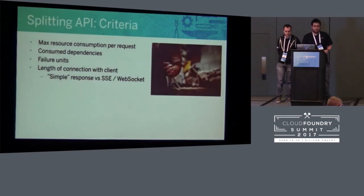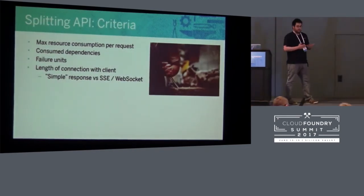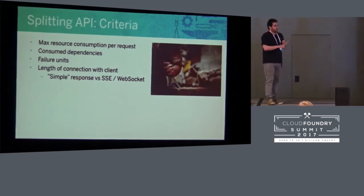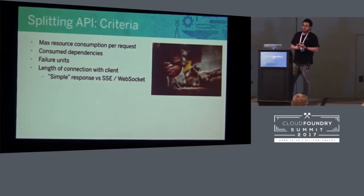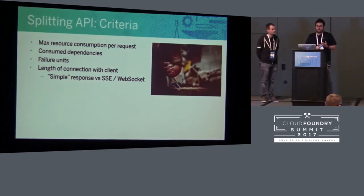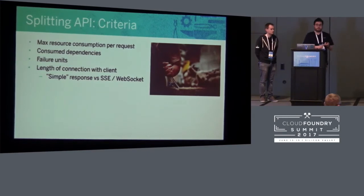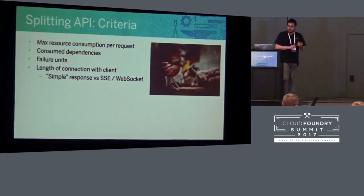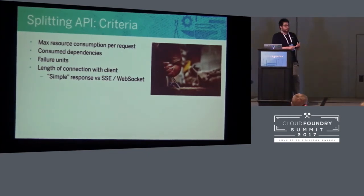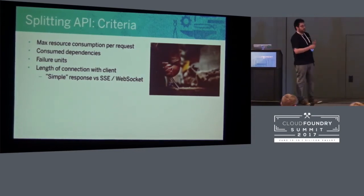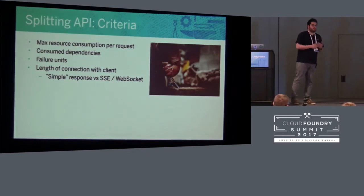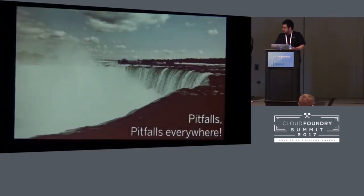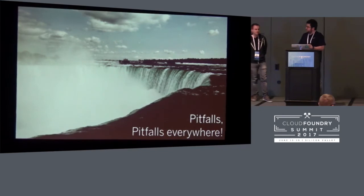Since we're talking about splitting APIs, let's recap the things to consider when splitting a web API to make them work really well: what resources are needed to serve requests; which dependencies and services are consumed; what we want to allow to fail independently; and how long we're going to handle client connections — for example, go-routers, keep-alive, or how many threads your application server needs. That brings us more or less to the end of the monolith splitting part.